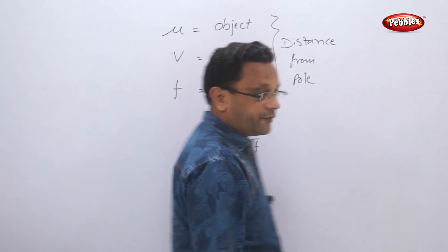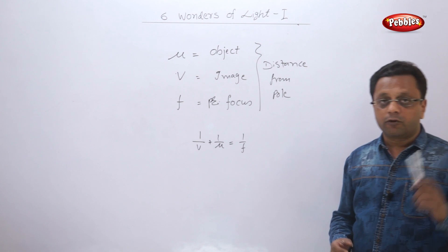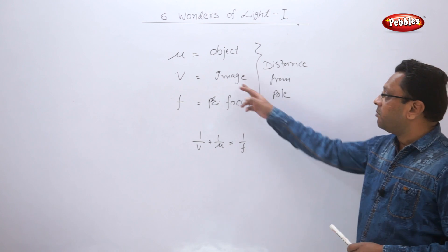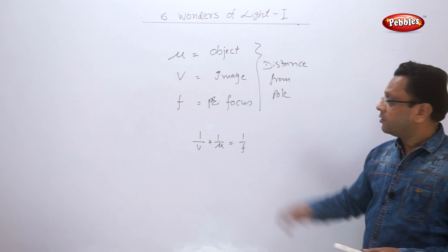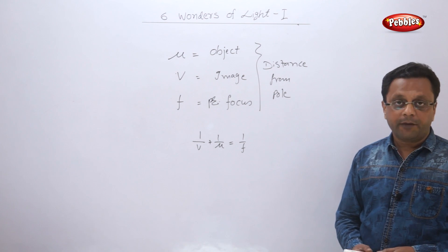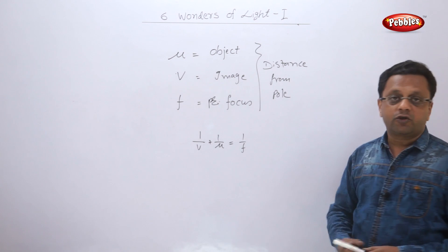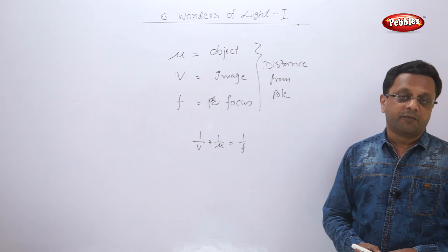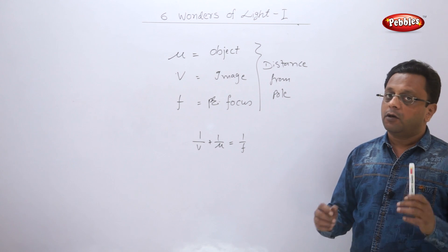Whenever you are taking the distances, you have to mind the sign notations. If the image is inverted, the distance should be taken as negative. This formula is true for all types of curved mirrors and for all positions of the object and image.